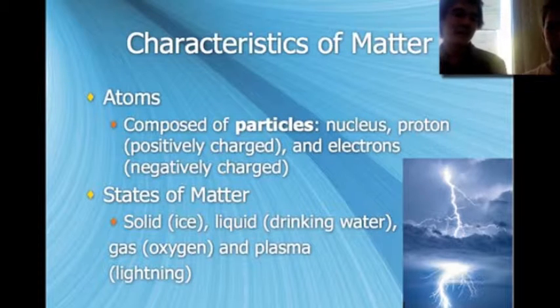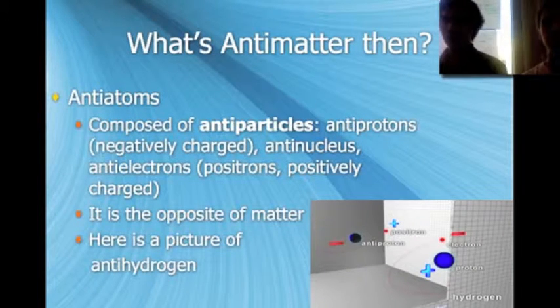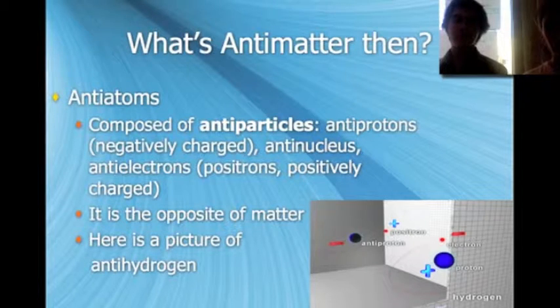So, let's get to antimatter. Antimatter is made of antiparticles. Basically, it's the opposite of matter. Here's an example: Antihydrogen, which is the antimatter version of the element hydrogen.